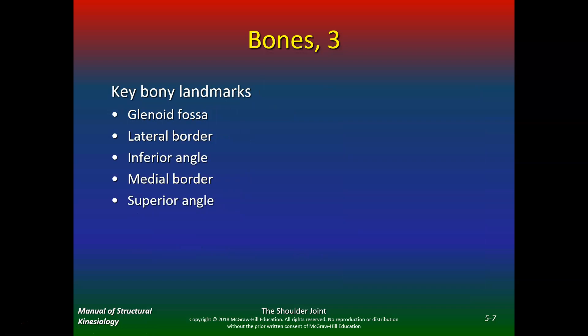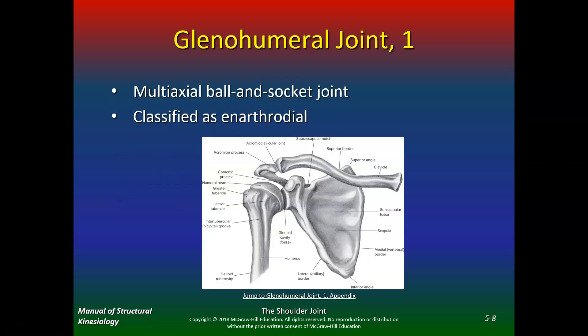Some other key landmarks are the glenoid fossa, lateral border, inferior angle, medial border, and superior angle. Here is the glenohumeral joint in a nutshell — the head of the humerus fits into the glenoid cavity. But unlike the acetabulum in the hip, which is a deep fossa, this is a pretty shallow groove. It really relies on the rotator cuff and ligaments to hold it in place, and because it has so much mobility, it's not going to be very stable.